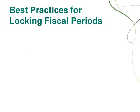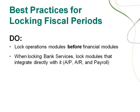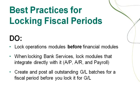In summary, remember to lock operations modules before financial modules. When locking bank services, lock modules that integrate directly with it — AP, AR, and payroll — and create and post all outstanding GL batches for a fiscal period before you lock it for GL.